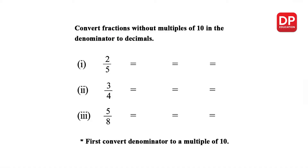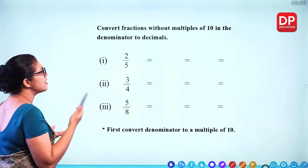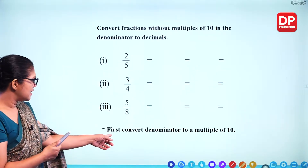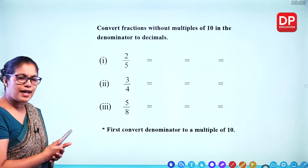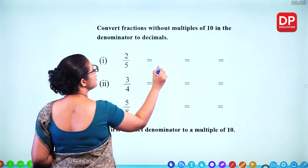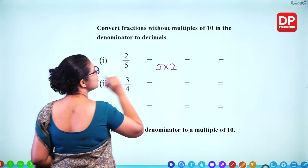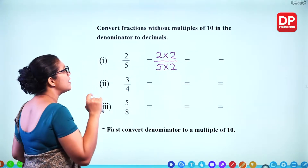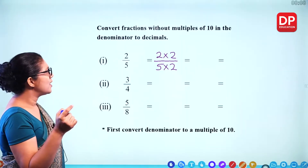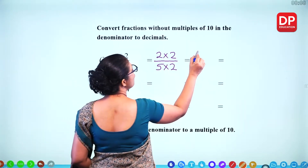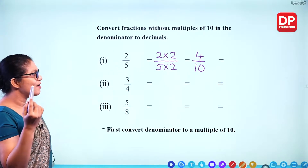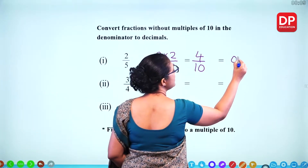Now convert fractions without multiples of 10 in the denominator to decimals. The denominator is not 10 nor 100, so we have to convert the denominator to a multiple of 10. For example, 5 — how can we convert to a multiple of 10? We can multiply by 2. When you do that, you do the same thing for the numerator. So 2 times 2 is 4, and 5 times 2 is 10. Now 4 over 10 can be written as 0.4.